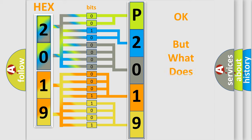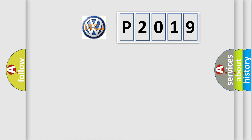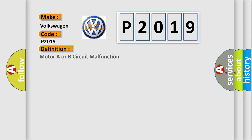We now know in what way the diagnostic tool translates the received information into a more comprehensible format. The number itself does not make sense to us if we cannot assign information about what it actually expresses. So, what does the diagnostic trouble code P2019 interpret specifically for Volkswagen car manufacturers? The basic definition is: Motor A or B circuit malfunction.